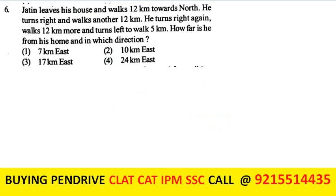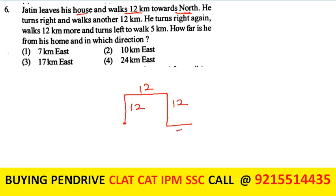Jatin leaves his house and walks 12 km north, turns right and walks 12 km, turns right again and walks 12 km, then turns left to walk 5 km. The northward distances cancel: 12 km north and 12 km south. The eastward distance is 12 + 5 = 17 km. He is 17 km east of his house. The third option is my answer.